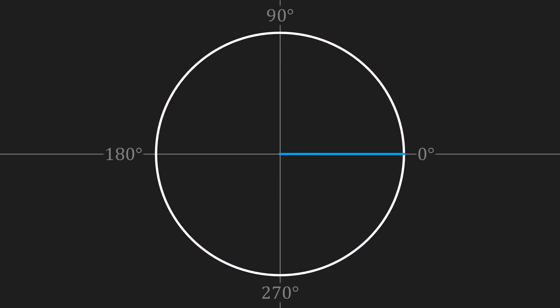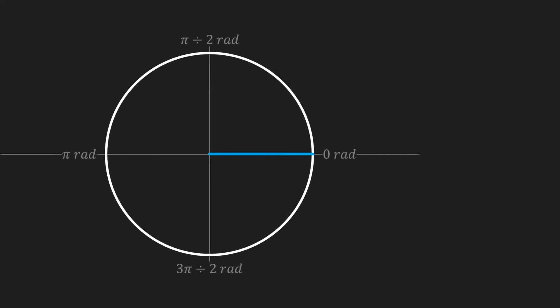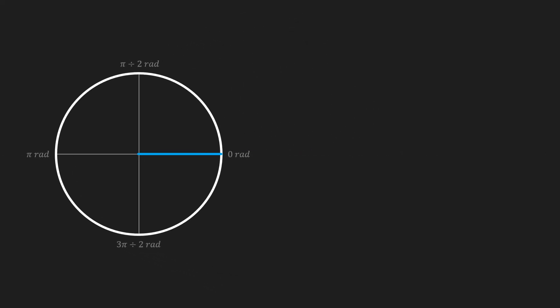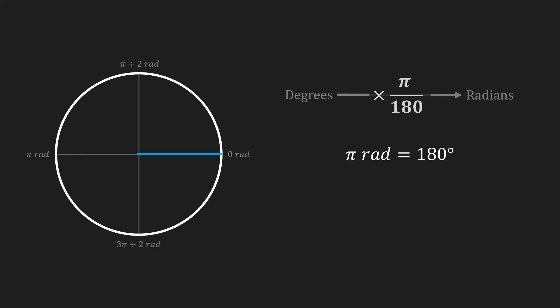We can use this information to rewrite our angles from degrees into radians. 0 degrees is 0 radians, 90 degrees is pi over 2 radians, 180 degrees is pi radians, and 270 degrees is 3 pi over 2 radians. To convert from degrees to radians we multiply by pi over 180, and to convert from radians to degrees we multiply by 180 over pi.